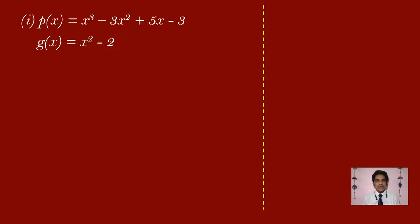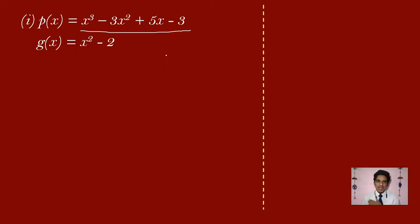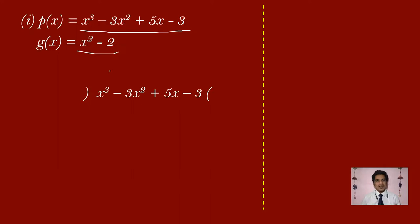In the first problem, P of x is x cube minus 3x square plus 5x minus 3, and the divisor G of x is x square minus 2. When you write the dividend, you write it as it is. But when you write the divisor x square minus 2, you have to write it as x square plus 0x minus 2.